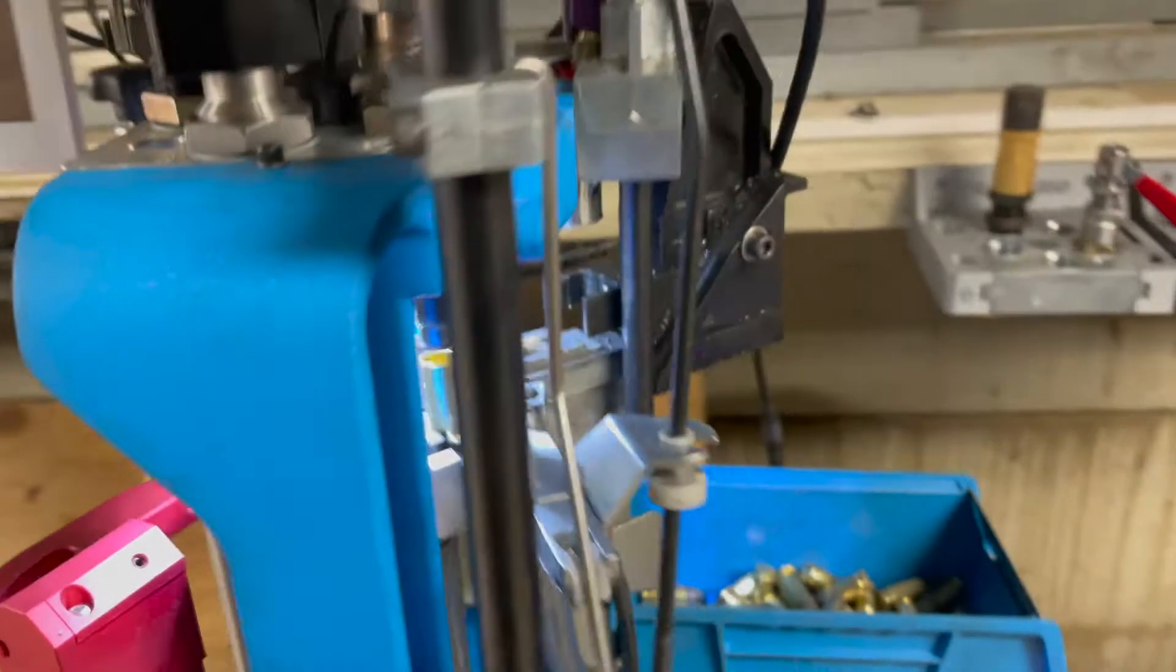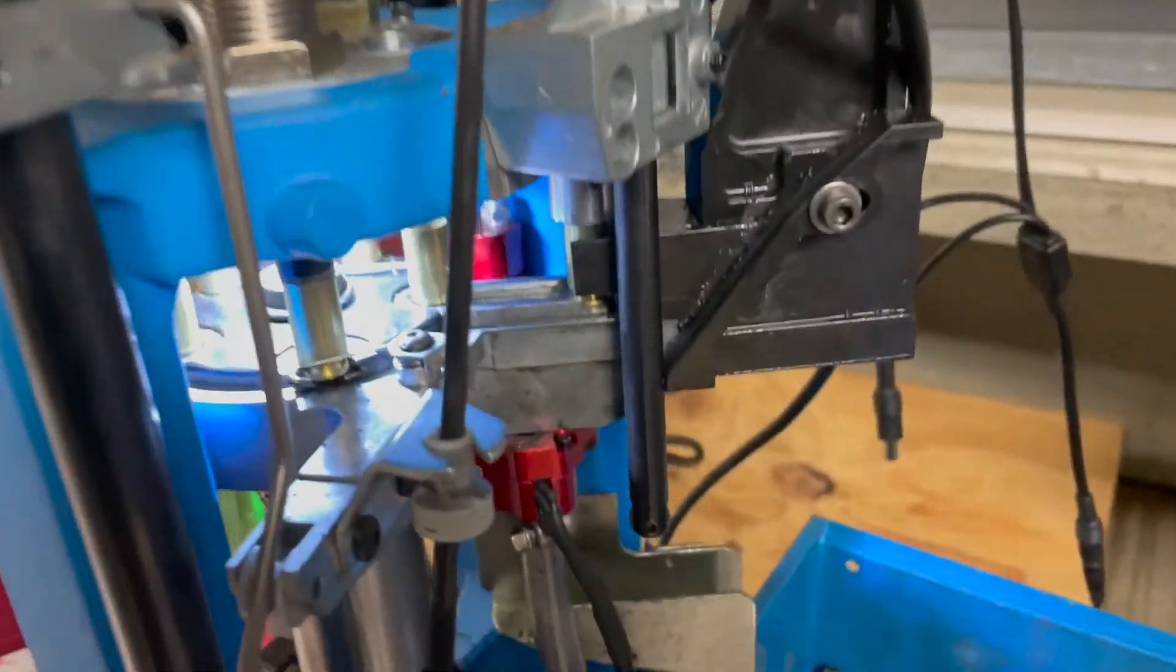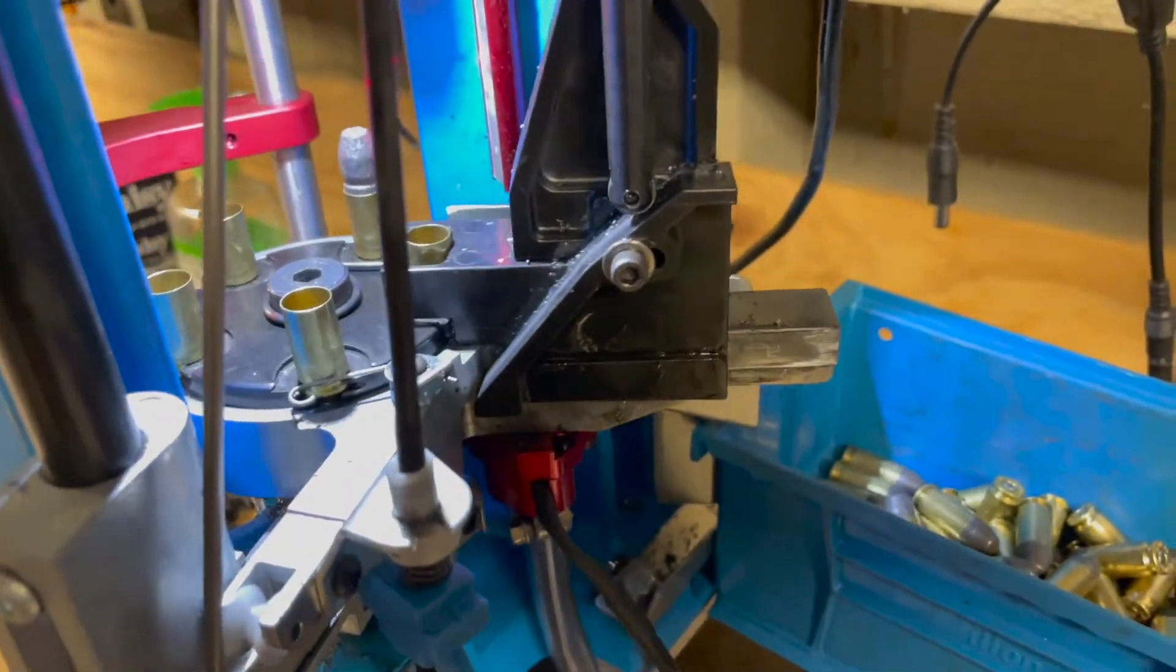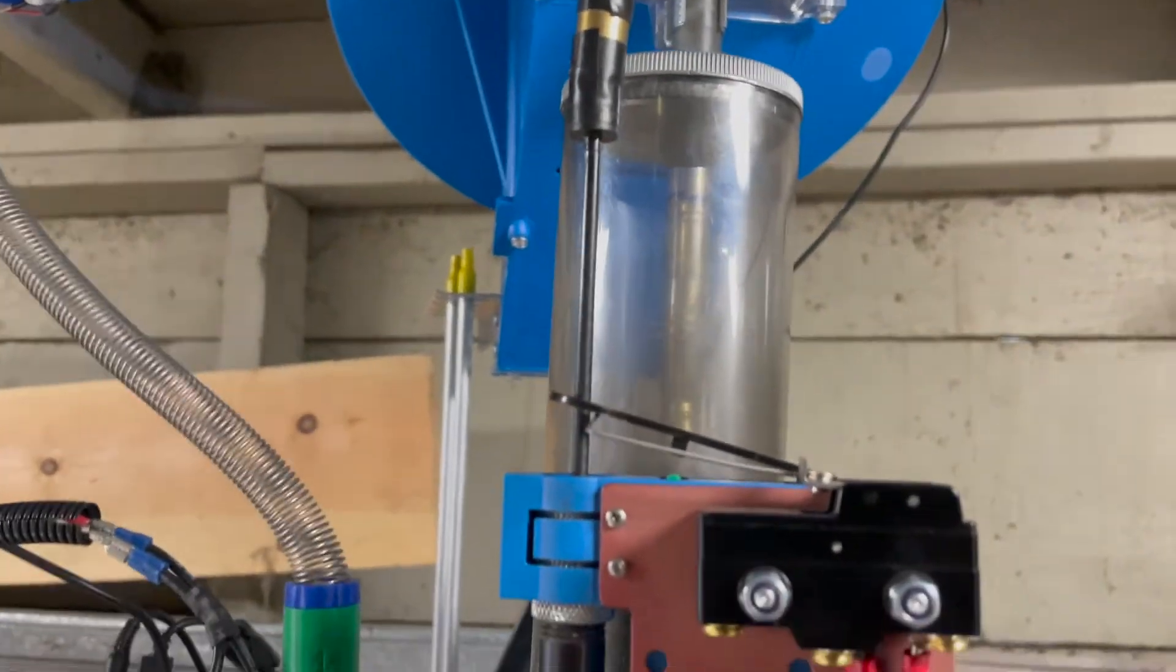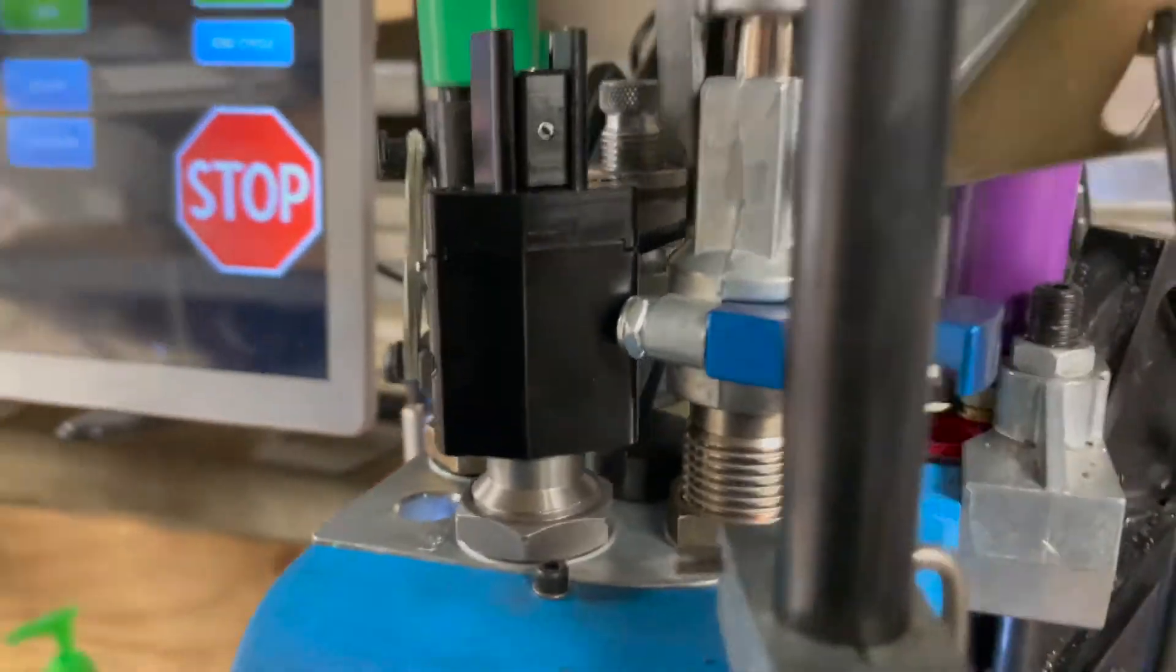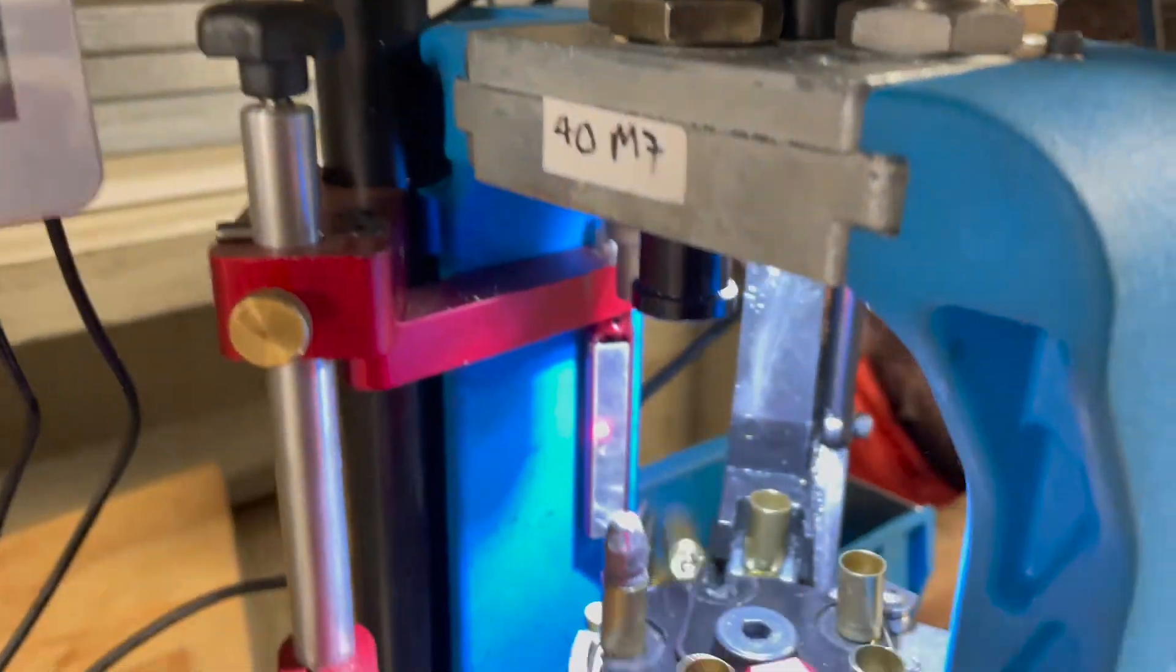So here is a full production mode. Optical sensor—I don't really use the low primer sensor. The powder check. You can see the powder check here. The bullet.